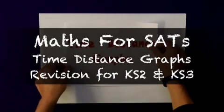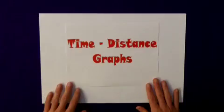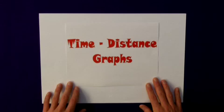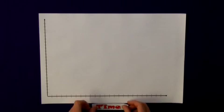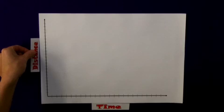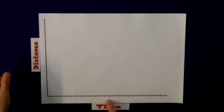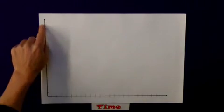This clip is about time-distance graphs, which are really useful for showing a moving object in diagram form. Typically, we use a pair of axes with time shown along the bottom on the x-axis and distance shown vertically on the y-axis.